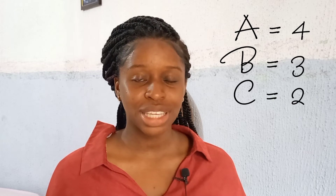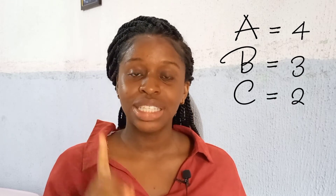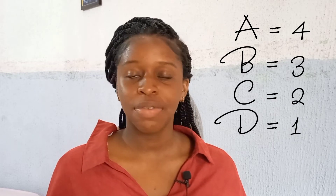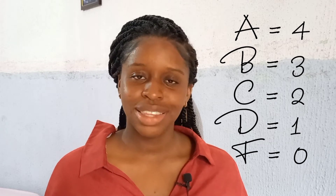In the 4.0 GPA system, the grades are A, B, C, D, and F — there is no E. The A is equal to 4 points, B is equal to 3 points, C is equal to 2 points, D is equal to 1 point, and F is 0.